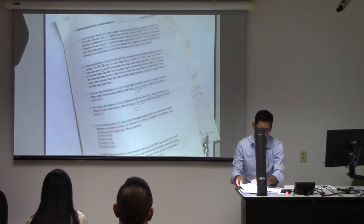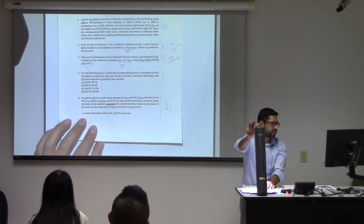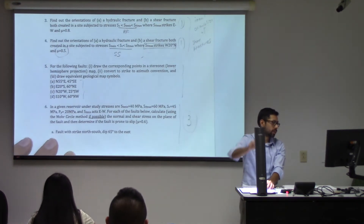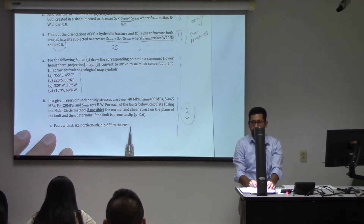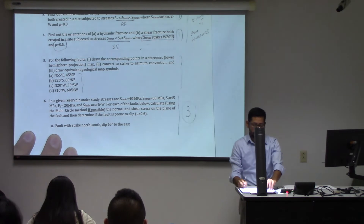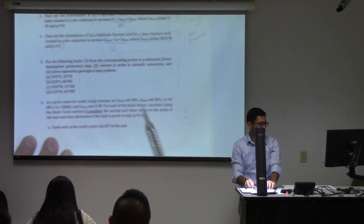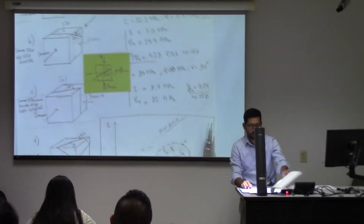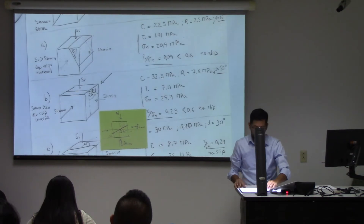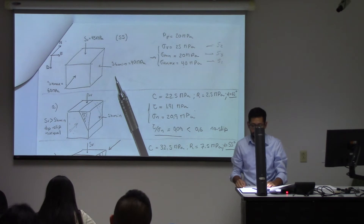Last problem — number six. Problem number six: you need to use the Mohr's circle in order to calculate shear and normal stress. This is the data: SH max, SH mean, pore pressure, all of that, and friction coefficient. The first thing I would do is to interpret that data and to draw a block diagram.